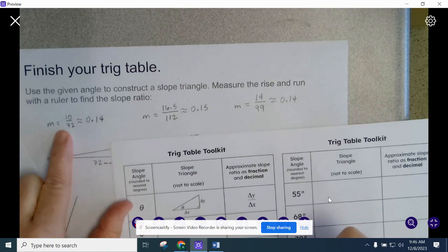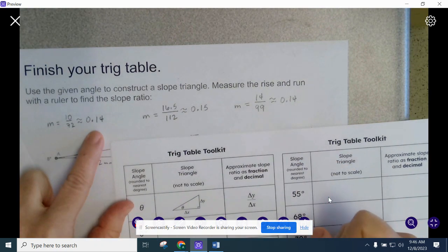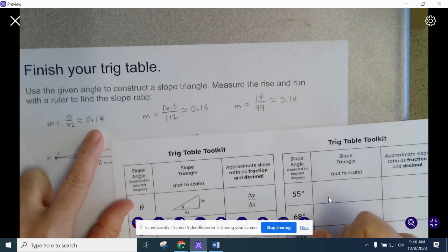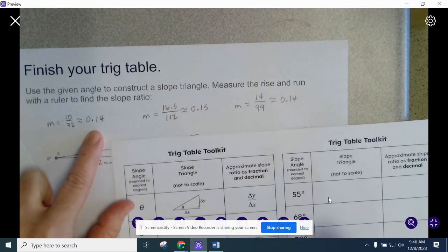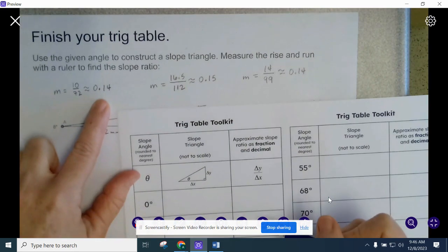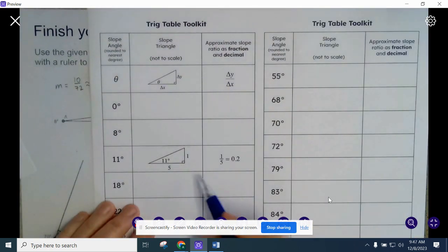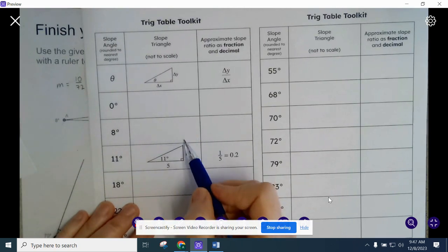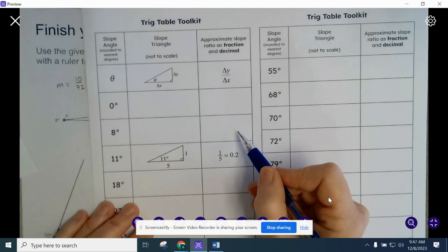And whichever fraction doesn't really matter. What's more important is the decimal. We'll be finding that out, how we use the decimal more in the future. So you can write 10 over 72 or 14 over 99 or if you measured it yourself, whatever measurements you got. And then make sure the decimal is equivalent. So that goes here. Draw a picture of your triangle and write your fraction and your decimal.